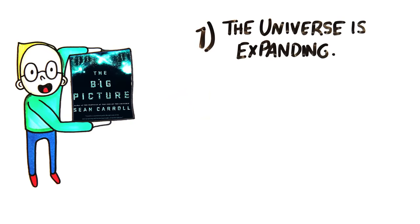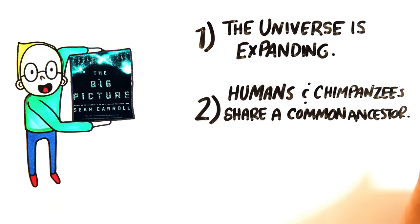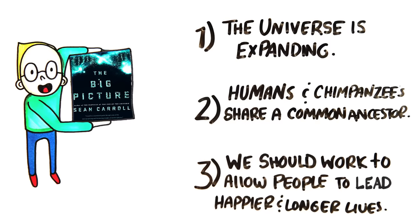One, the universe is expanding. Two, humans and chimpanzees share a common ancestor. Three, we should work to allow people to lead happier and longer lives. The first two statements are rooted in science.